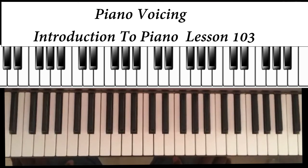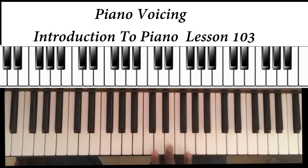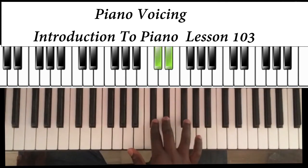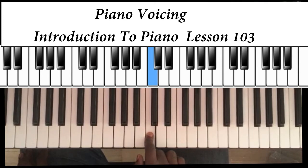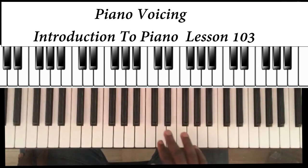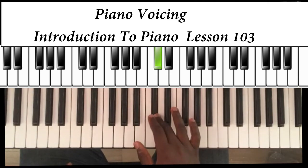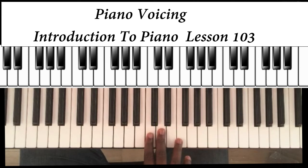Welcome back to Piano Voice Energy. Today we are learning Introduction to Piano, Lesson 103. In previous lessons we located our C — that's the two black keys and the white key immediately to the left, which we call C. We also learned intervals: moving from a key to the next immediate key is called a semitone or half step, and skipping a key to the next is called a whole step or tone.